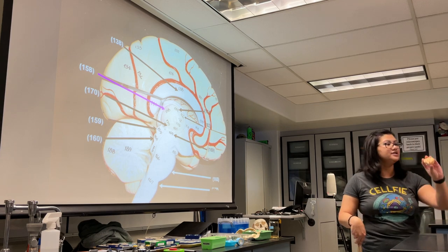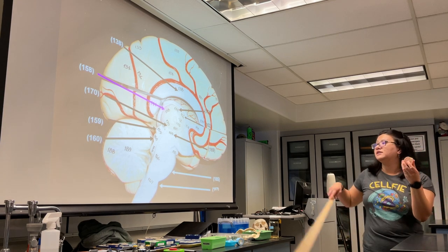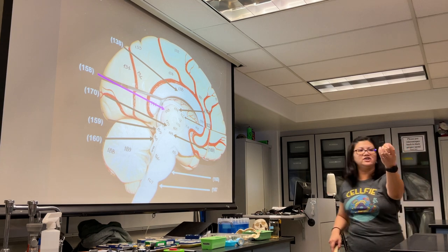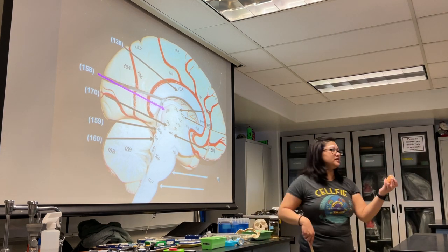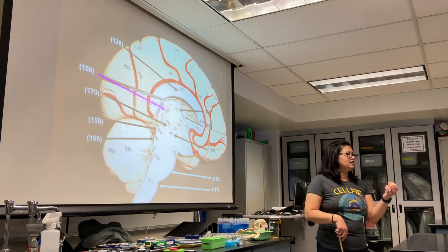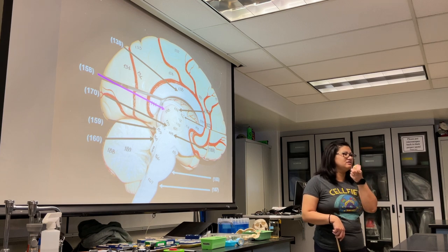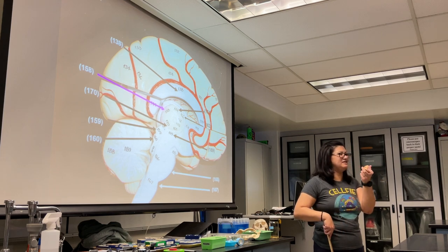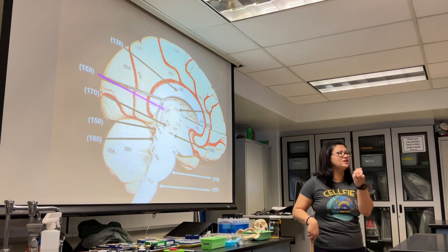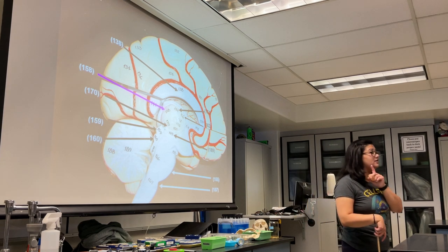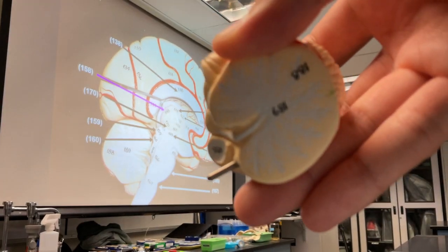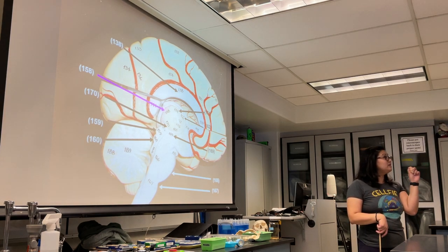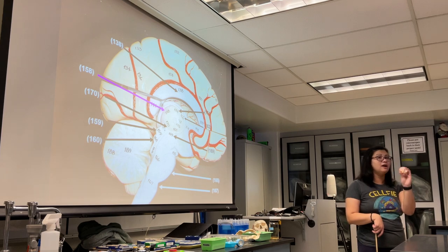If you flip the cerebellum over and dissect it down the middle, you can see a white structure that looks like a tree. The white matter of your cerebellum is called the arbor vitae. 'Arbor' means tree, 'vitae' means life — so arbor vitae means tree of life, because of the tree-like appearance. It is white matter, meaning it's comprised of myelinated axons.